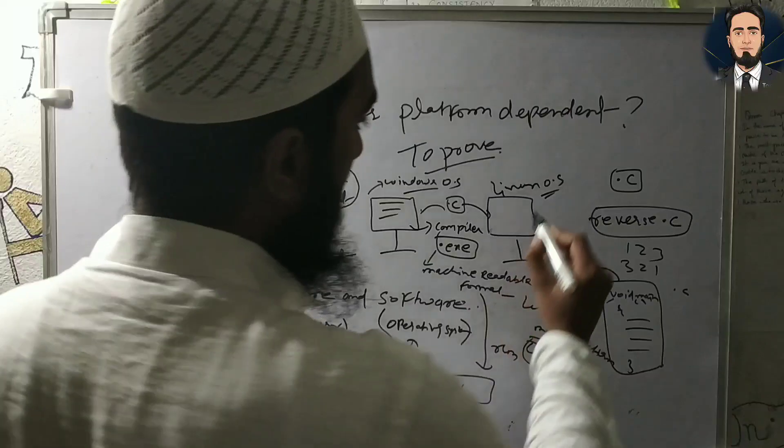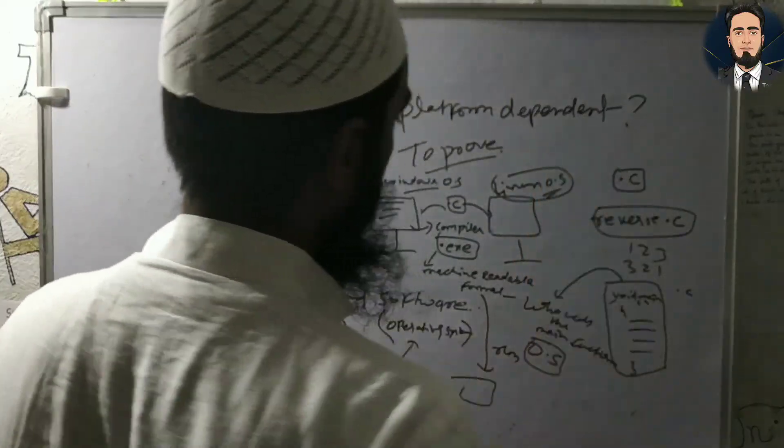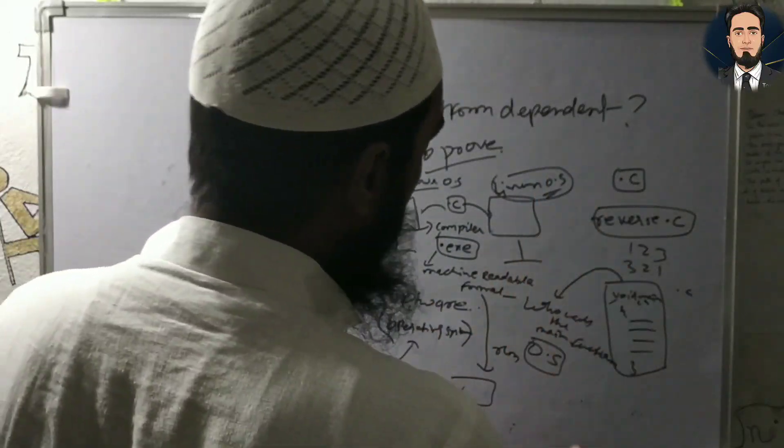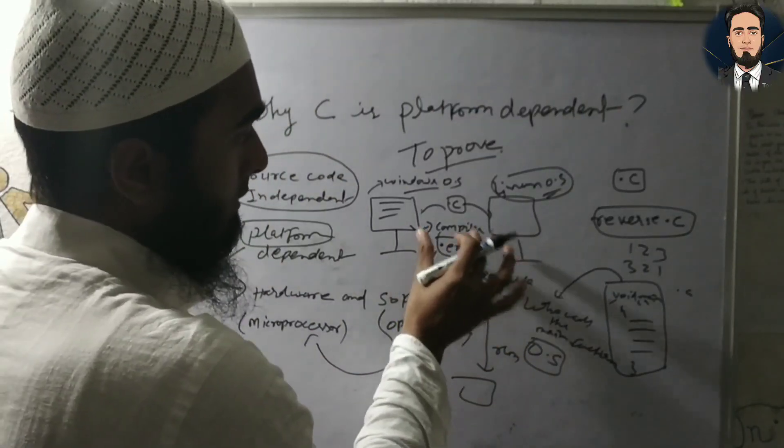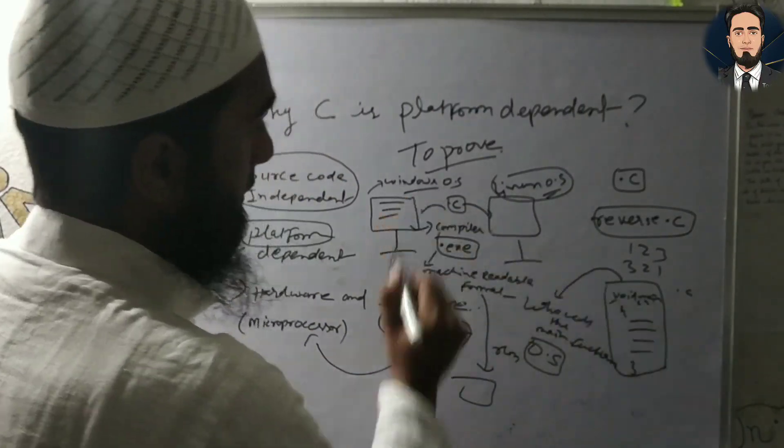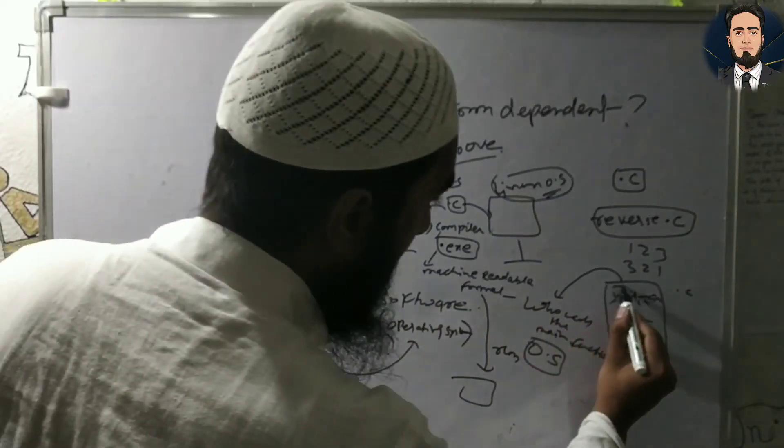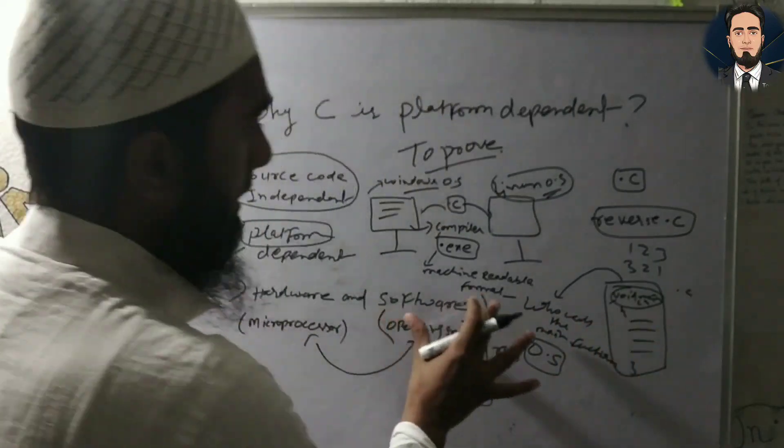Now, if you run this .c file, if you run this on another operating system, when we compile this on Windows operating system, we call this main program, the main method.